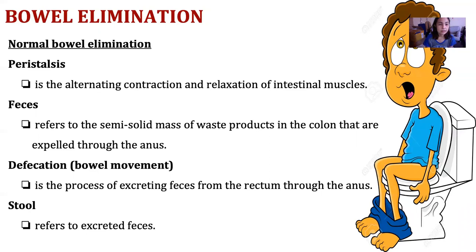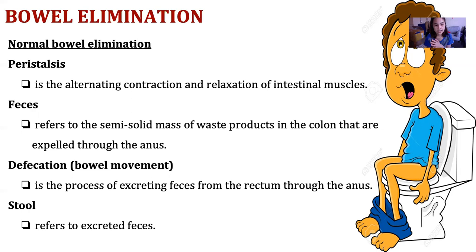Next is bowel elimination. For normal bowel elimination, we have peristalsis — the alternating contraction and relaxation of intestinal muscles. Feces refers to the semi-solid mass of waste product in the colon. Defecation is the process of excreting feces from the rectum through the anus, also called a bowel movement. Stool refers to the excreted feces.